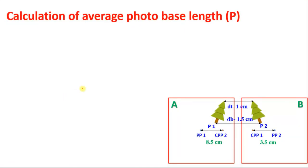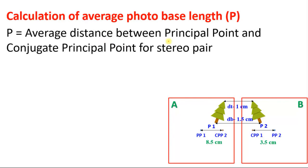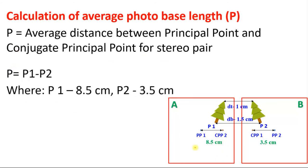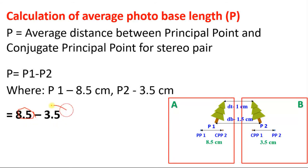First, calculate the average photo base length — the average distance between the principal point and the conjugate principal point for a stereo pair. Here p1 = 8.5 cm and p2 = 3.5 cm. Formula: p = p1 − p2. So p = 8.5 − 3.5 = 5 centimeters. This is the average photo base length for the two photographs.